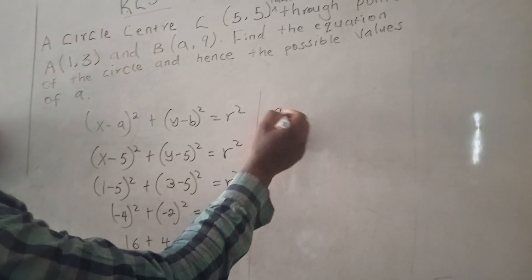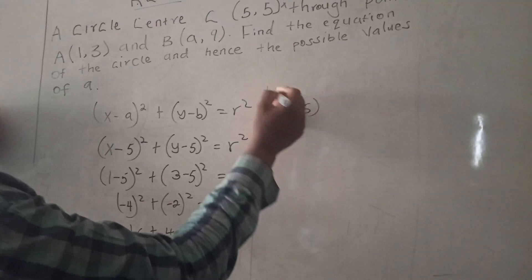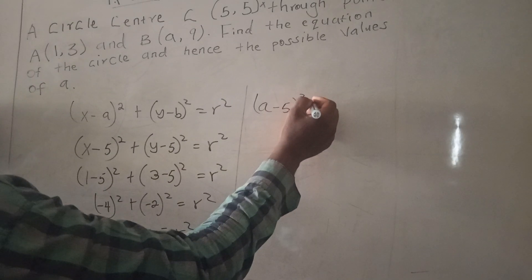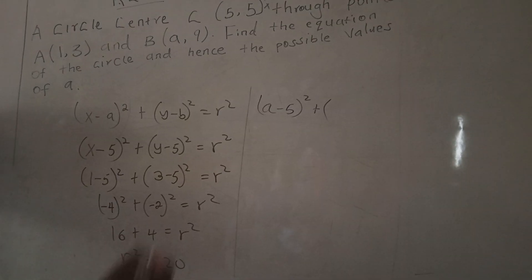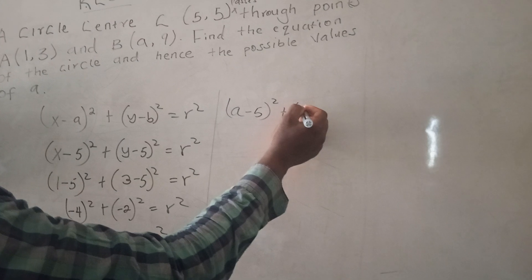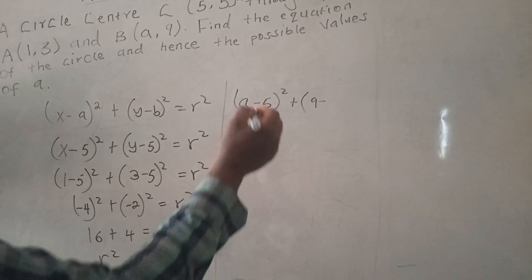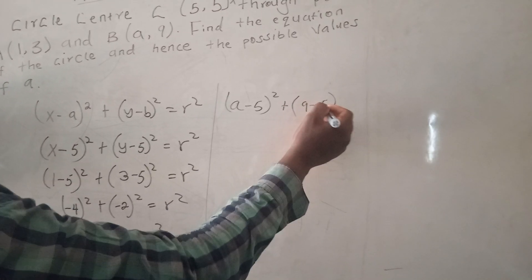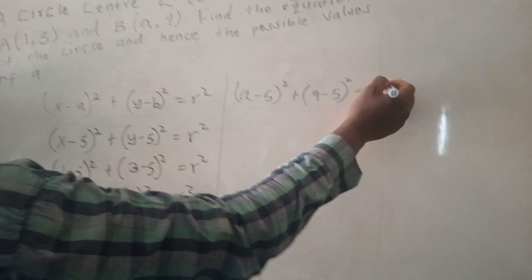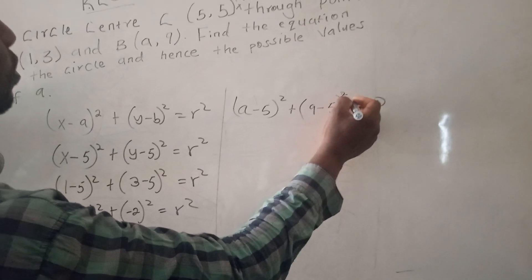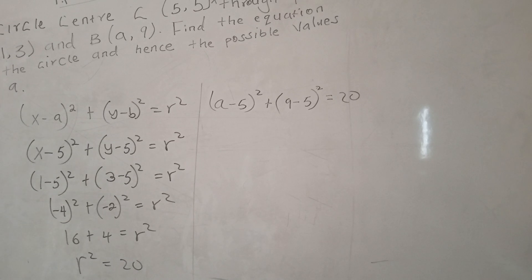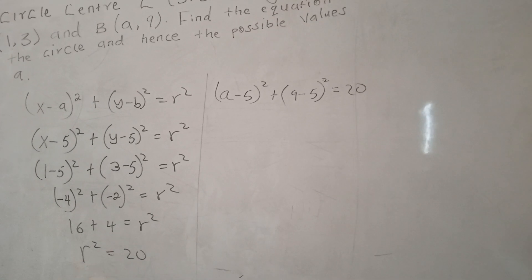Therefore, if we use (a - 5)² + (9 - 5)² = 20, this should give us 20. The radius is always a constant, regardless of which point you choose along the circumference.